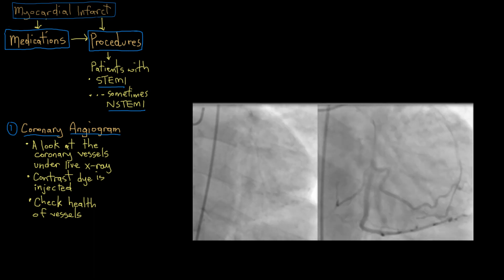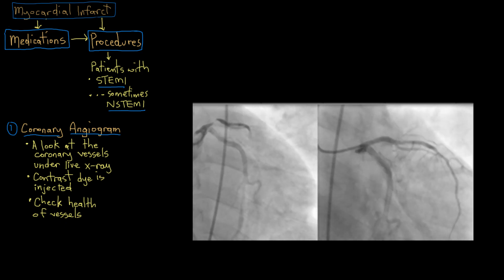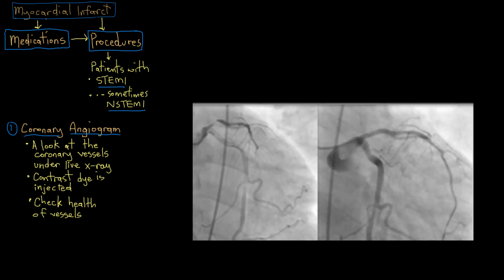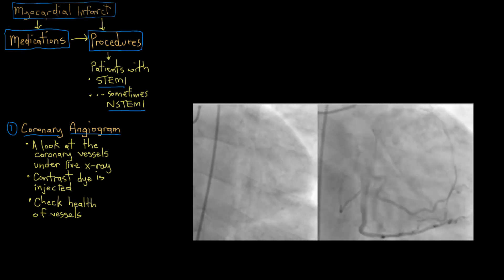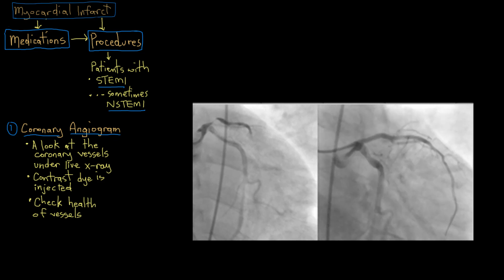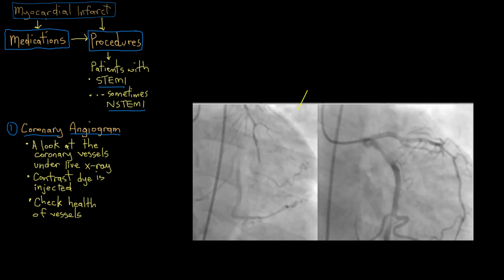So this is what a coronary angiogram looks like. You can see it's really a cool sort of dynamic picture. You can get a real-time look at how healthy the person's coronary arteries are. So yes, these are blood vessels, and this is actually the outline of the heart here.